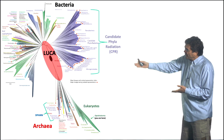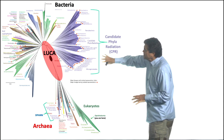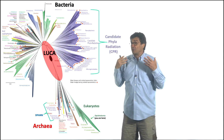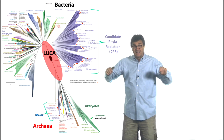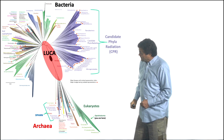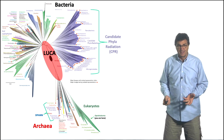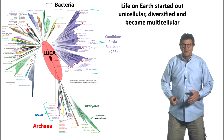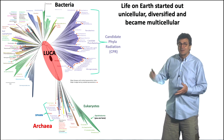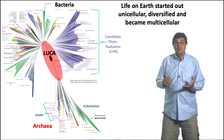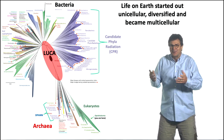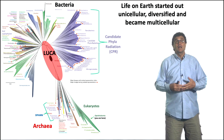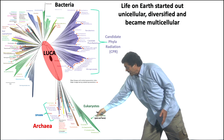This is the tree of all life. The bacteria here are sometimes called single cells, but really they are single cells, and filaments, and mats. But the type of complex multicellularity is right over here in eukaryotes. We know from this chart that life on Earth started out unicellular or filamentous, then diversified and became multicellular, at least along the lineage that led to the eukaryotes.